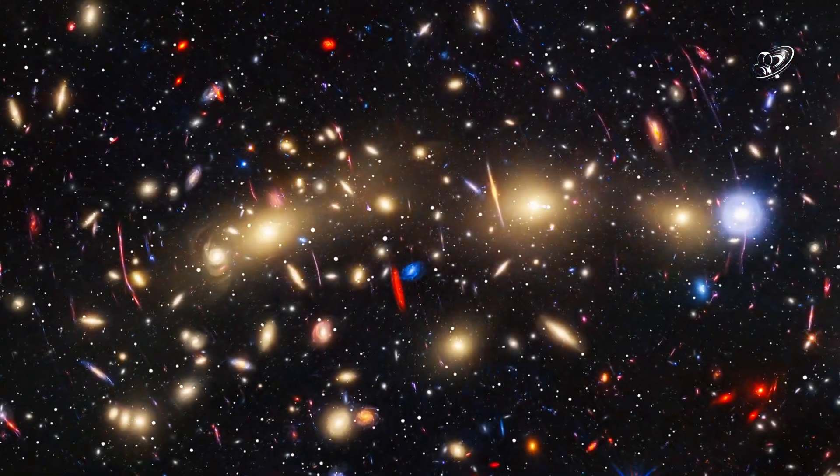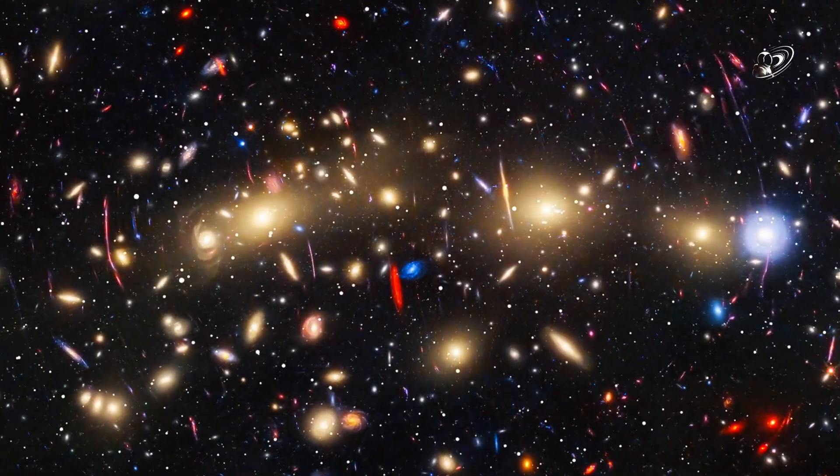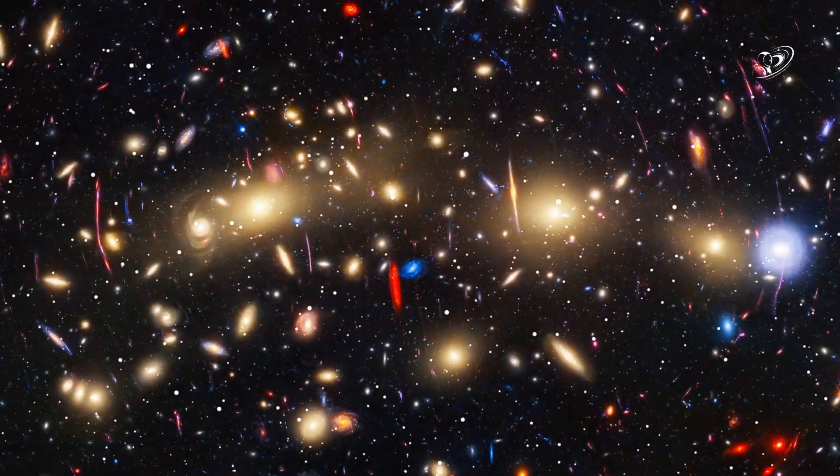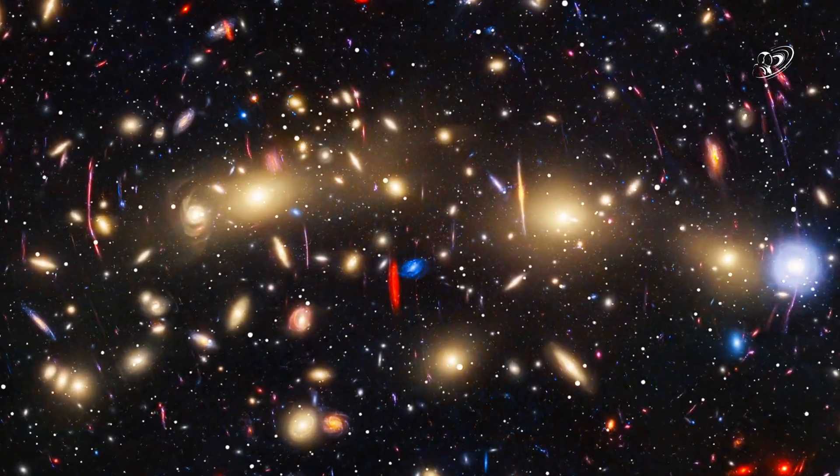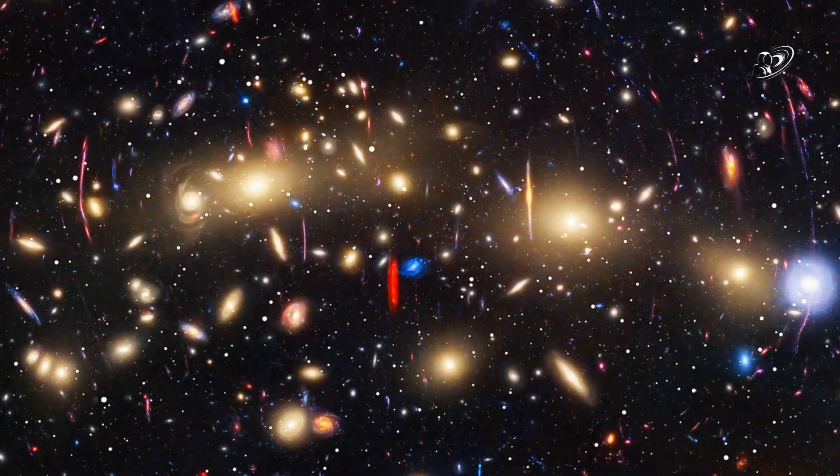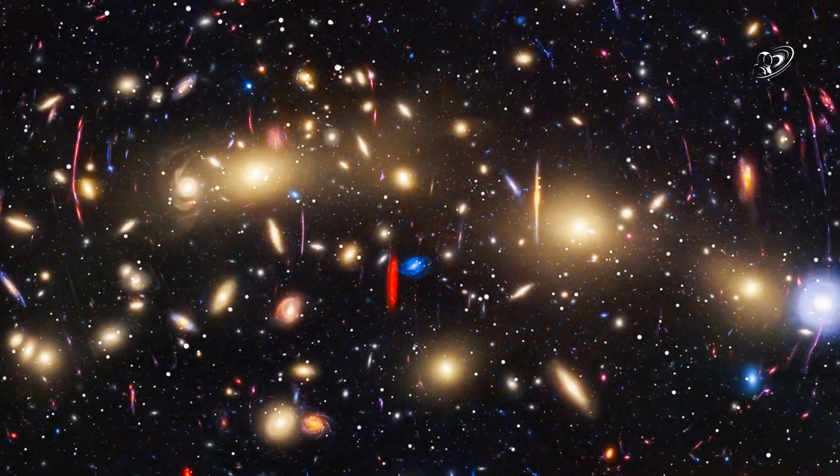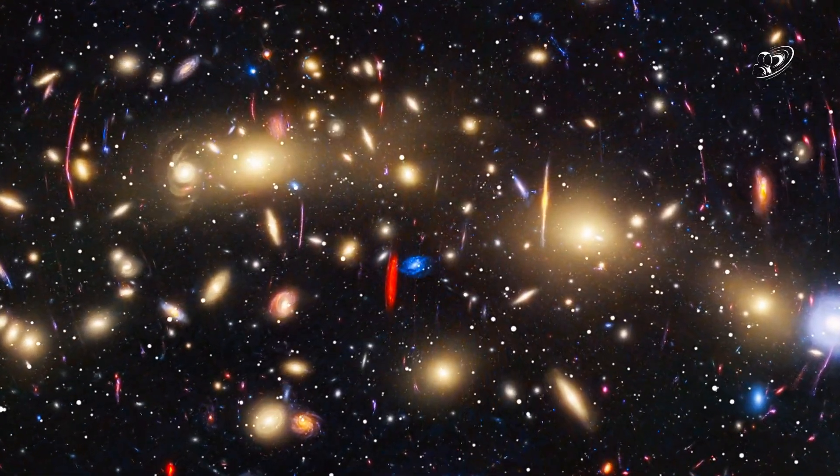Galaxies began to form—vast islands of stars, gathering under the pull of gravity. Spirals, ellipticals, clusters. Each one a universe within the universe, each one a theatre where stars were born, lived, and died.